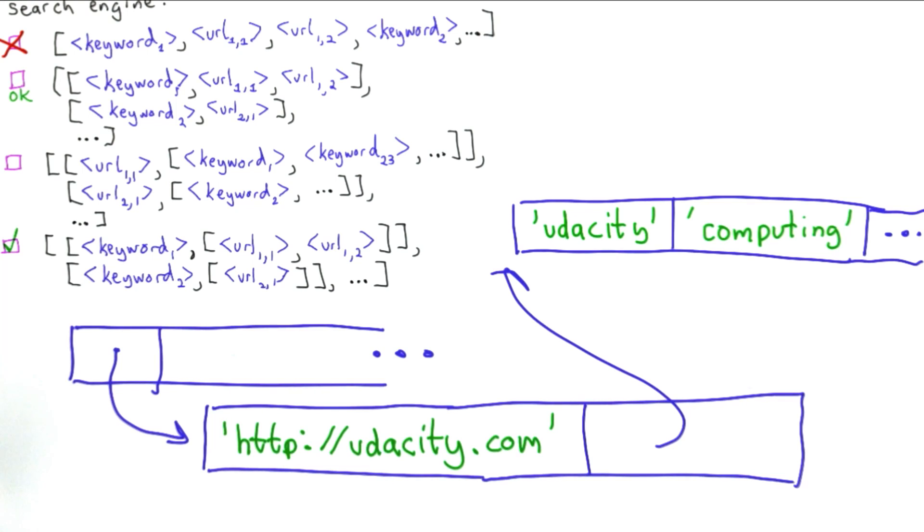The problem with this approach is it's not going to make it easy to look up the pages where a keyword appears. This is almost like having to scan all the pages over again. To look for a particular keyword, we've got to look in each entry, look in the second part of that entry, scan it to see if that keyword appears.